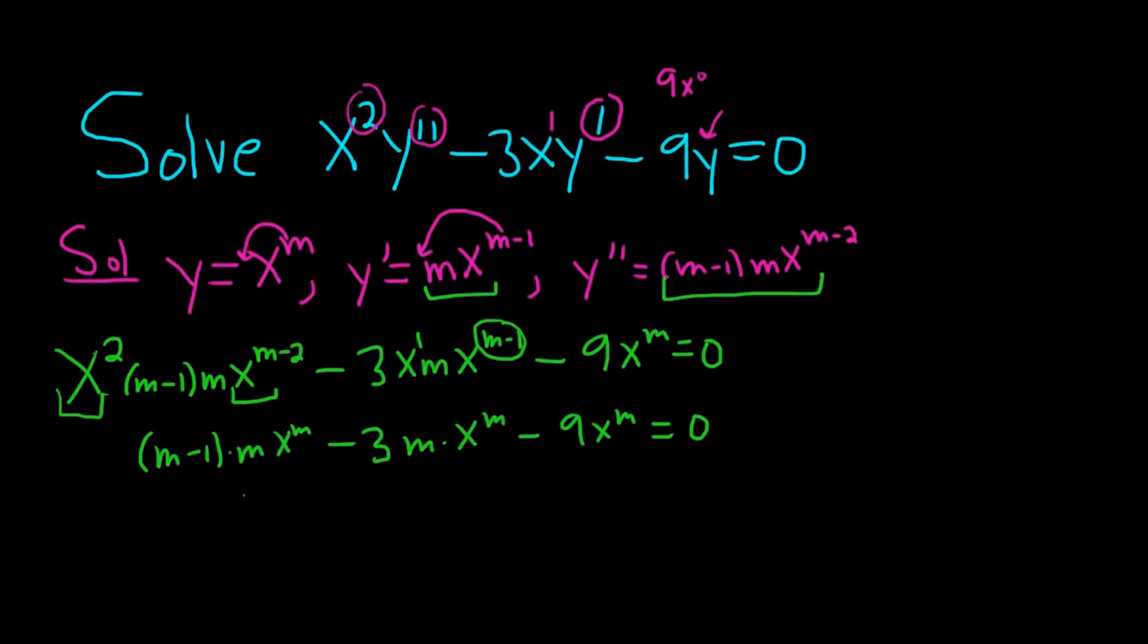Then what you do is you factor out the x to the m. So x to the m. And this becomes m minus 1m minus 3m minus 9. And that's equal to 0.